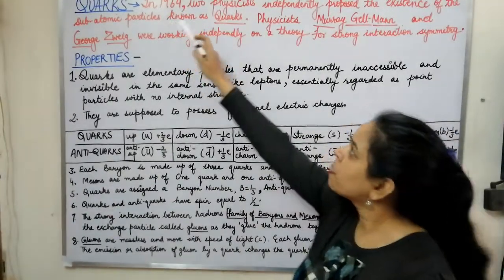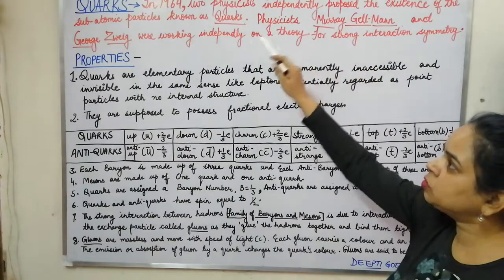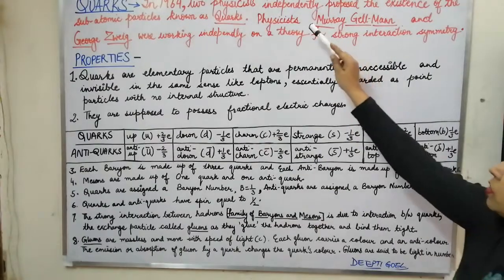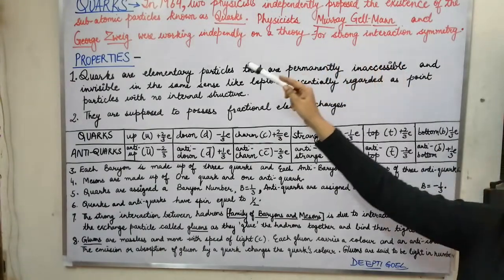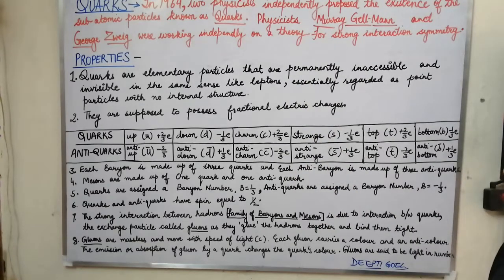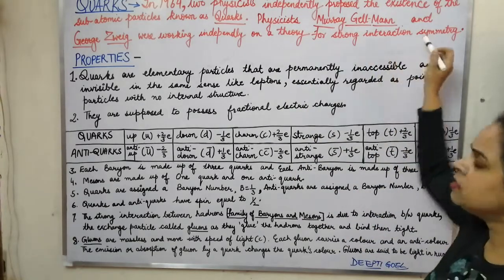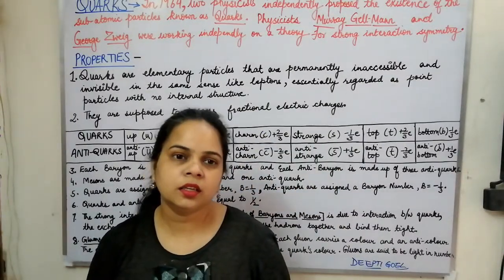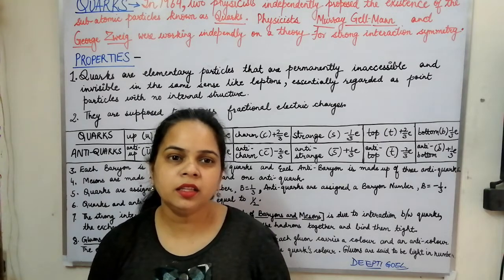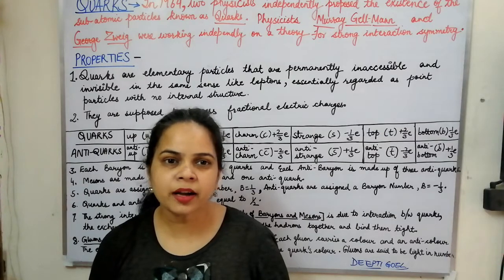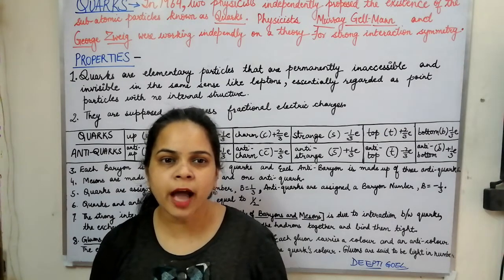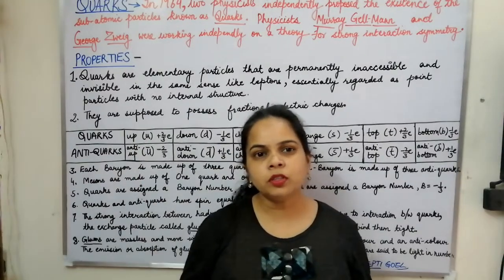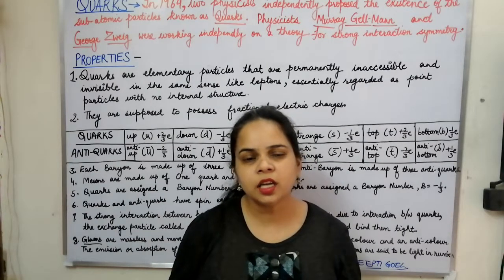In 1964, two physicists independently proposed the existence of these subatomic particles that were named as quarks. The physicists were Murray Gell-Mann and George Zweig. They were independently working on the theory of the strong interaction symmetry for elementary particle physics. They studied that the hadrons were bound together by very strong forces, and the particles responsible for this — the hadrons — were made up of certain particles which had properties of charm, flavor, and certain colors.